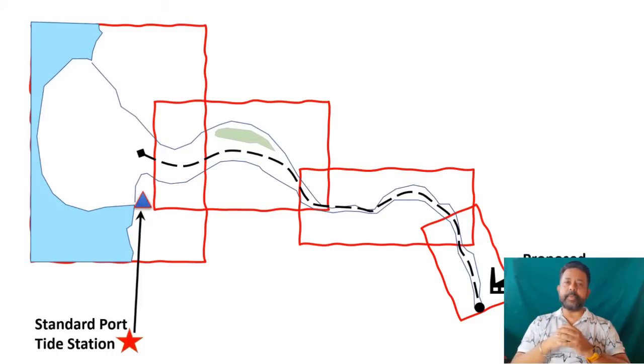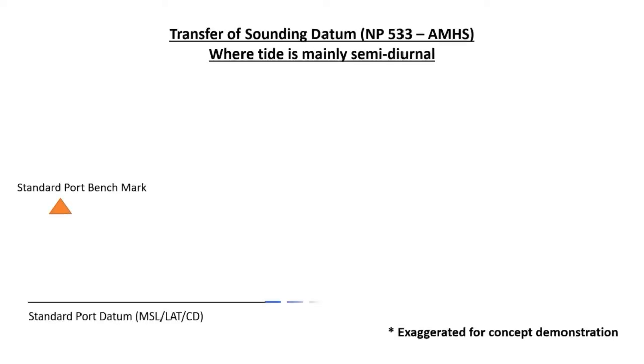So here a surveyor must use his experience and lay of the land to decide upon the distance by which he has to establish the benchmark inside the river. So how can you transfer the standard port datum to a new benchmark?